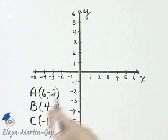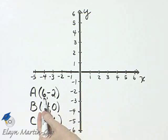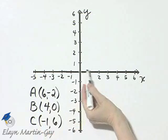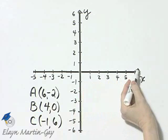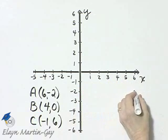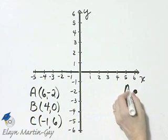So we'll start at the origin, 6 units to the right. From there, 2 units down. Origin, 1, 2, 3, 4, 5, 6 units to the right and then 2 units down. This is point A.